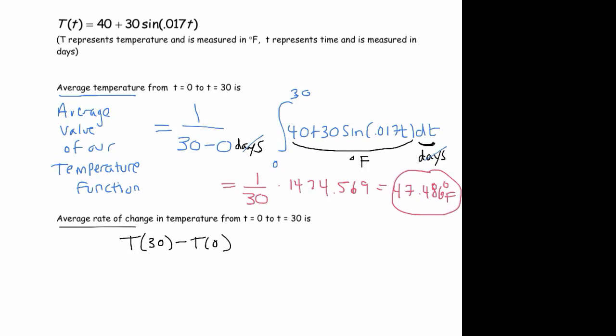Divided by the change in time. Here the units are degrees Fahrenheit, and here the units are days. So you're actually getting a rate here, degrees per day.